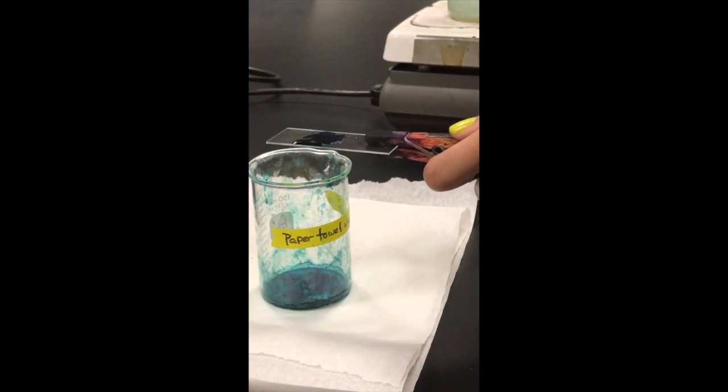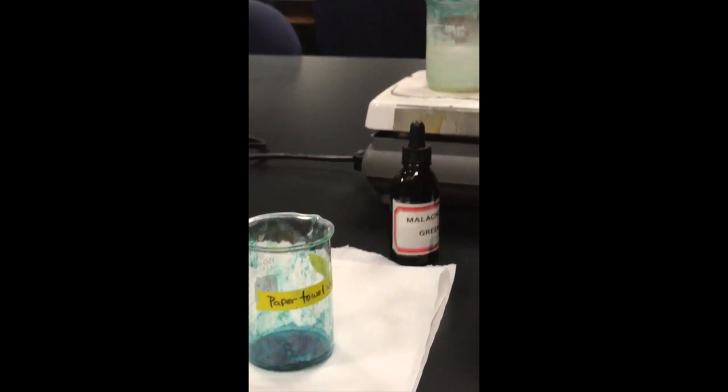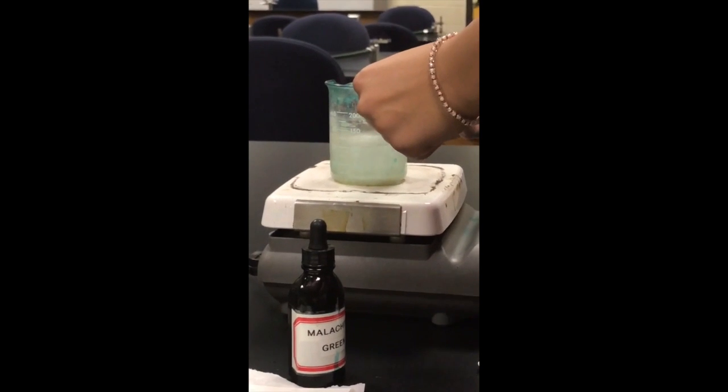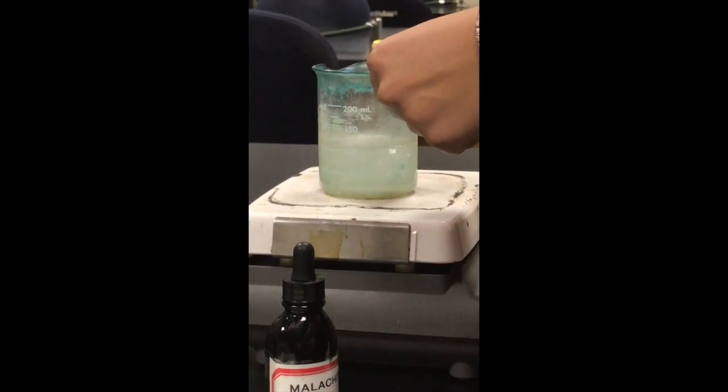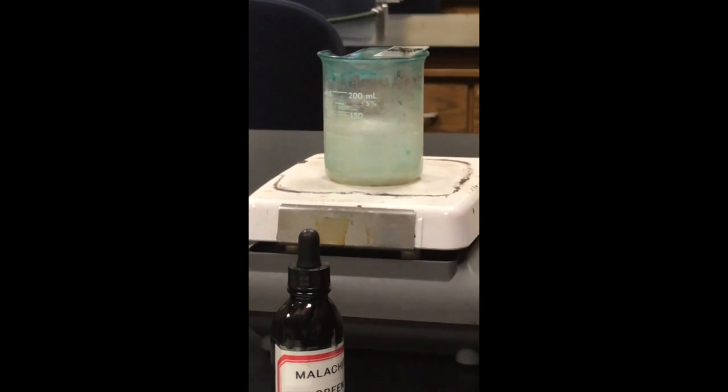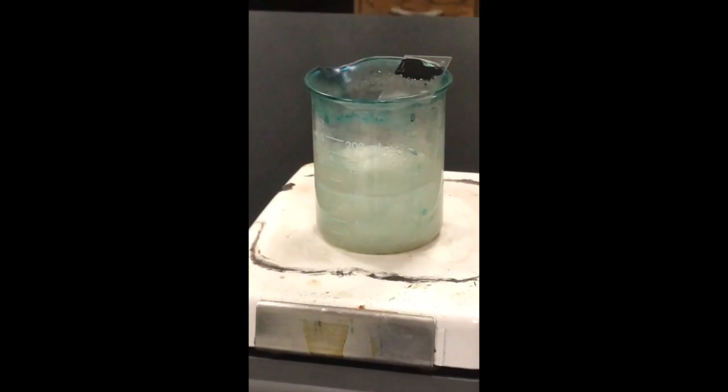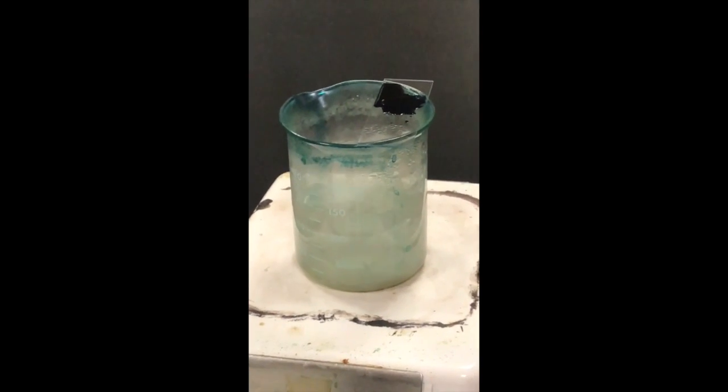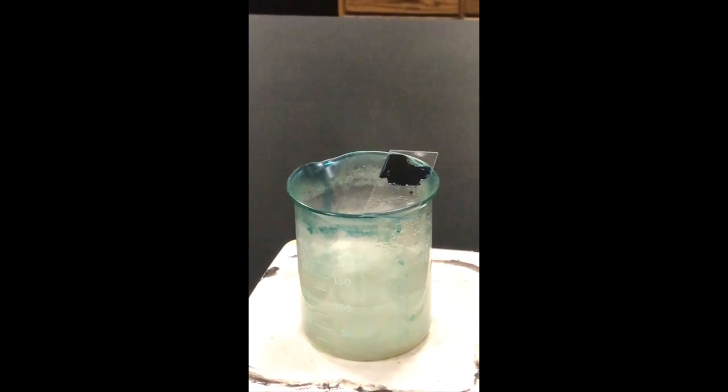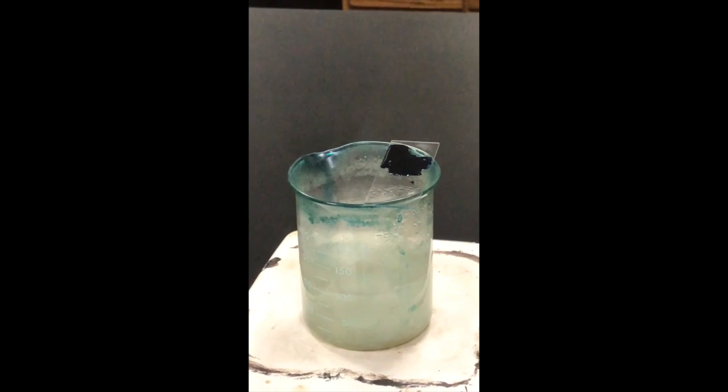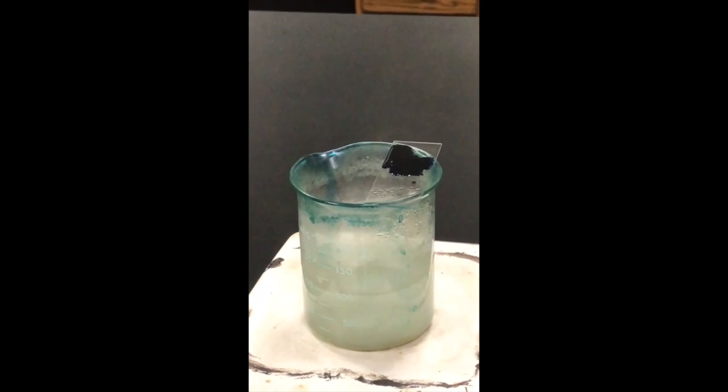Now that it's been flooded, you're going to rest it on the beaker that you've allowed to boil. You want to steam the slide for about 5 minutes. Steaming the slide means that the dye itself is hot enough to generate steam. If the dye starts to dry, you want to make sure to add more malachite green and do not let the slide dry out.